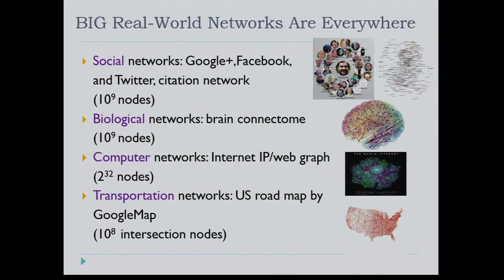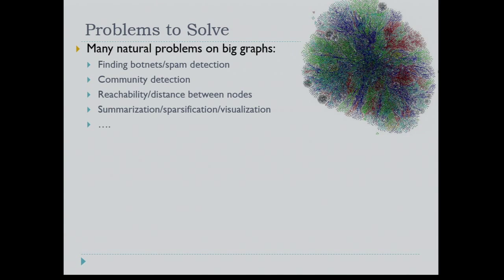Computer networks like the internet IP or web graph potentially have 2^33 nodes, because the length of the IP address is 32 bits. Transportation networks, even at Google Maps, have graphs with lots of nodes — even the smallest one is 10^8. We need to solve many natural problems on these: botnet detection, spam detection, community detection in social networks, reachability and distance in transportation networks, and summarization, sparsification, and visualization in biological networks.